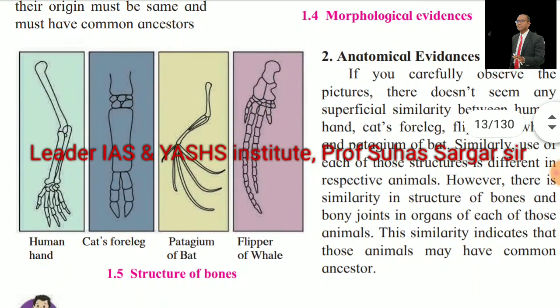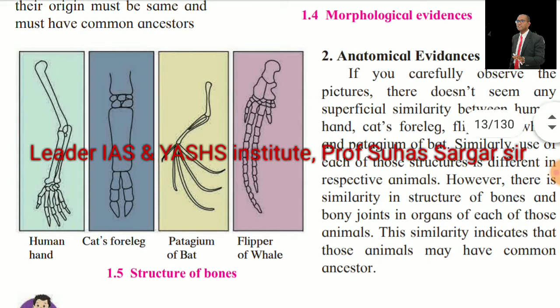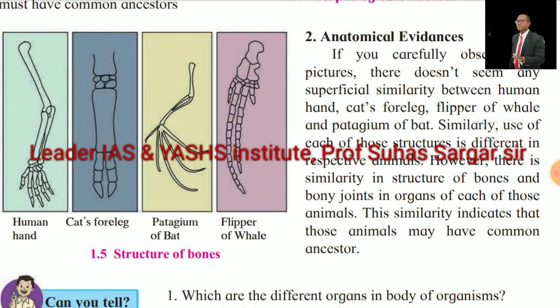Second, Anatomical Evidence. See the picture of structures of bones of the human hand, cat's foreleg, patagium of bat, and flipper of whale. Although there does not seem to be any superficial similarity between these structures, and the use of each structure is different in respective animals, there is a similarity in the structure of bones and bony joints in organs of each of those animals. This similarity indicates that those animals may have common ancestors.